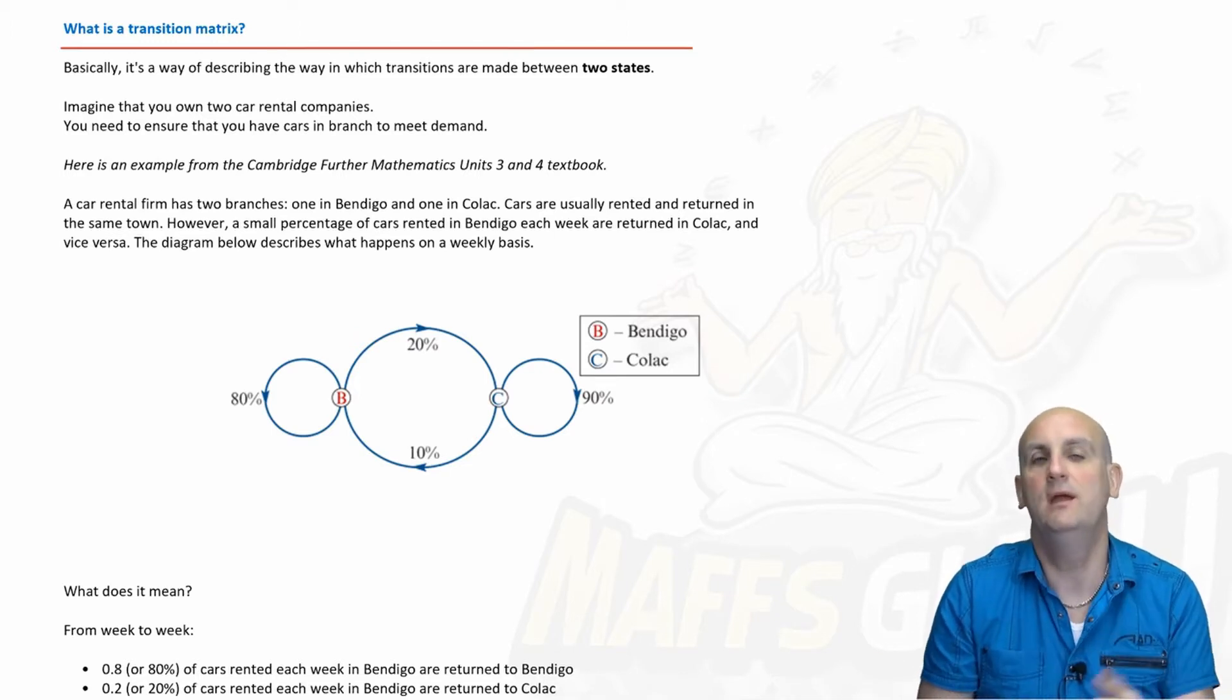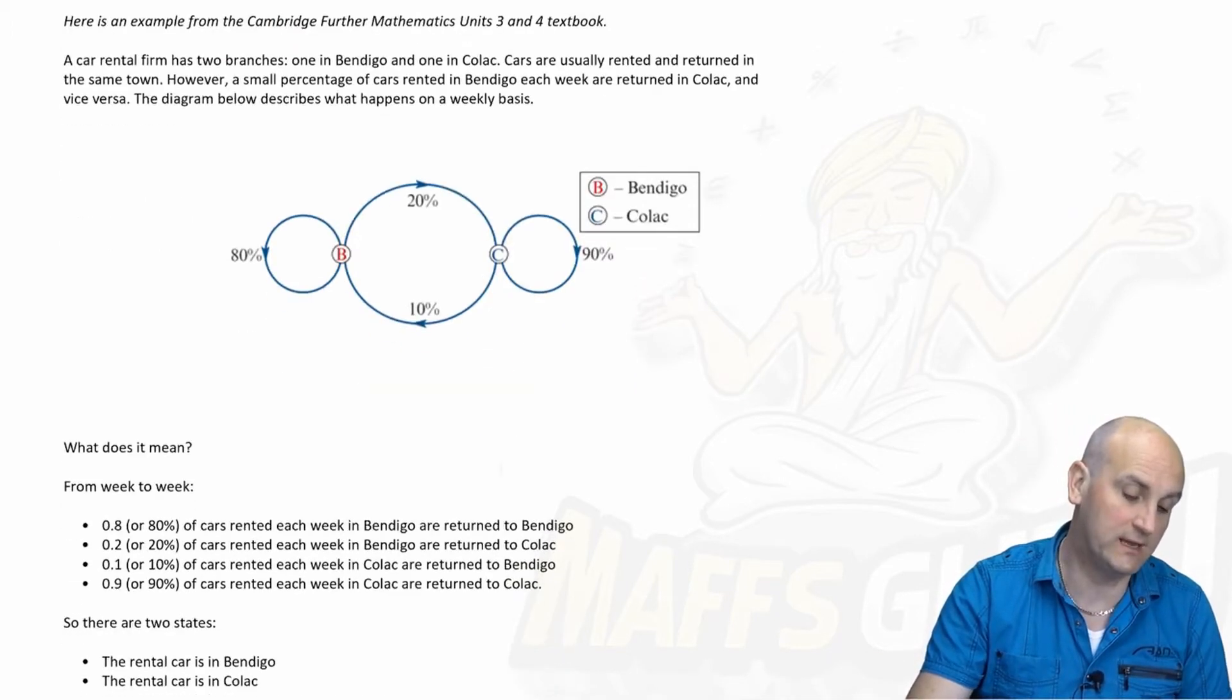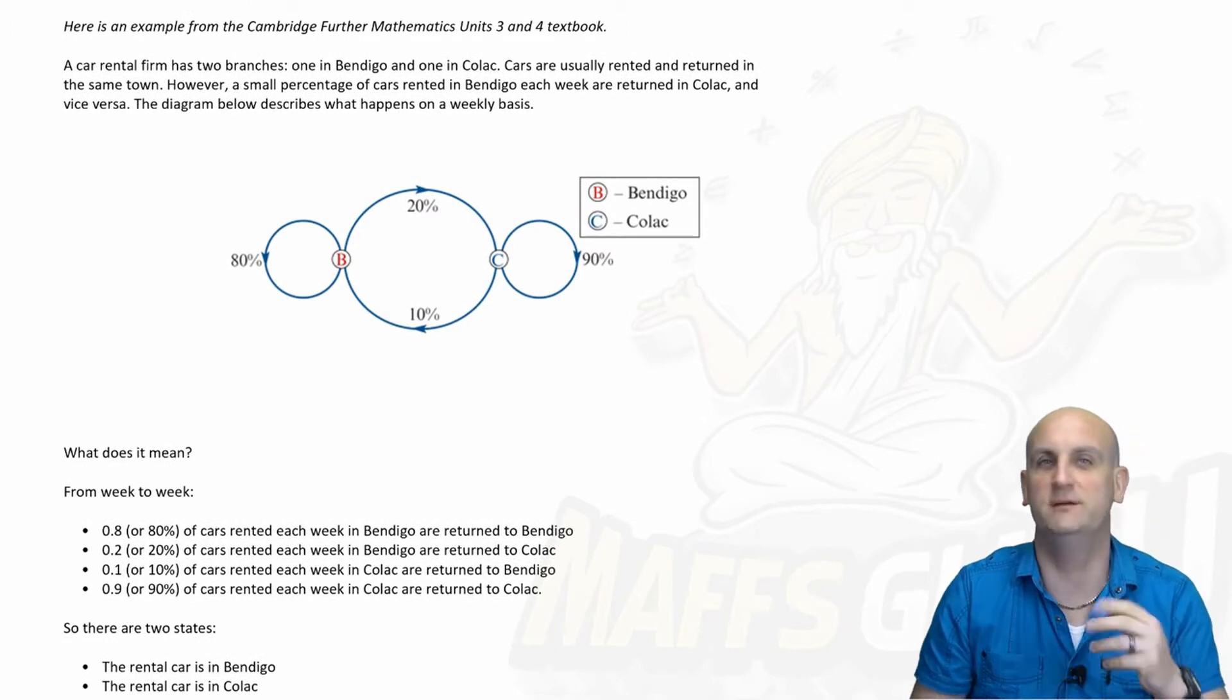We're going to use an example here of a car hire company who have multiple branches around. We're going to start with two branches, one in Bendigo and one in Colac and it's from an example from the Cambridge Further Maths textbook. Thank you very much, Cambridge.